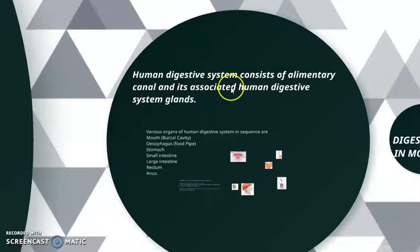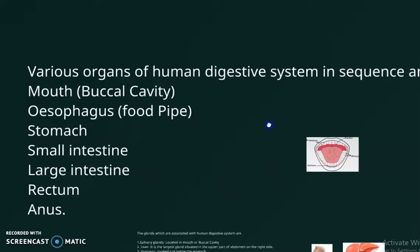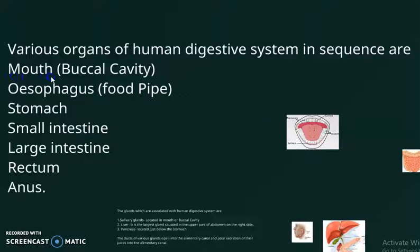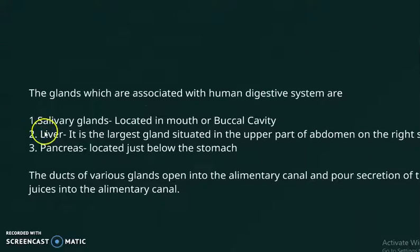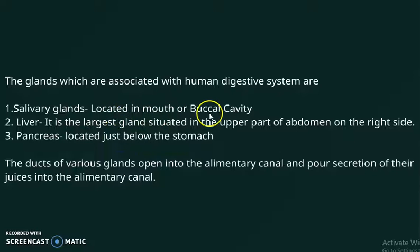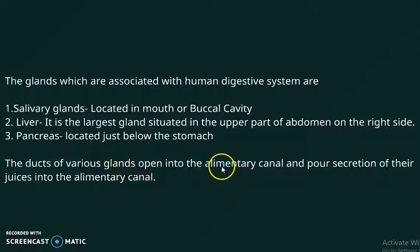In the human digestive system, we have an alimentary canal and certain glands associated with it. The sequence of digestion begins in the mouth, also called the buccal cavity. Food then passes through the esophagus, stomach, small intestine, large intestine, rectum, and anus. Associated glands include the salivary glands in the mouth, the liver — the largest gland — and the pancreas, the second largest gland, located below the stomach, which pours its secretions into the alimentary canal through a duct.